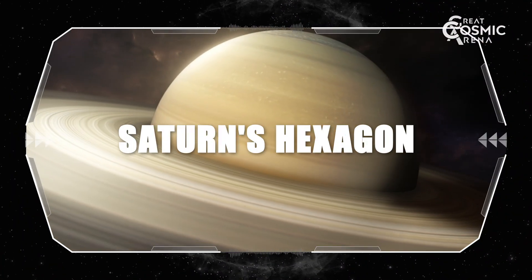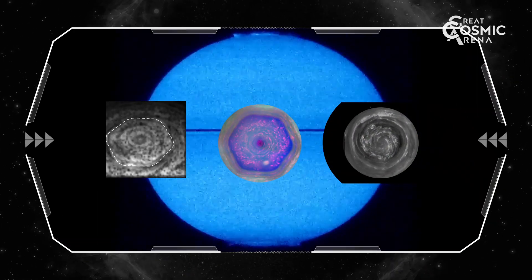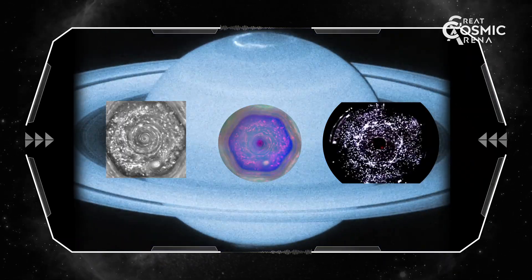Saturn's hexagon. Saturn's north pole features a persistent six-sided jet stream pattern, a geometric quirk of atmospheric flows.